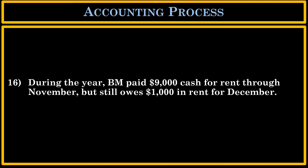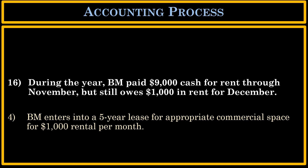In transaction 16, we are accounting for BM's rent for the year. During the year, BM paid $9,000 cash for rent through November, but still owes $1,000 in rent for December — this is on December 31st. BM entered into a five-year lease at $1,000 per month. From March to November it paid $9,000 cash in rent, and at year-end on December 31st it still hasn't paid the $1,000 owed for December.